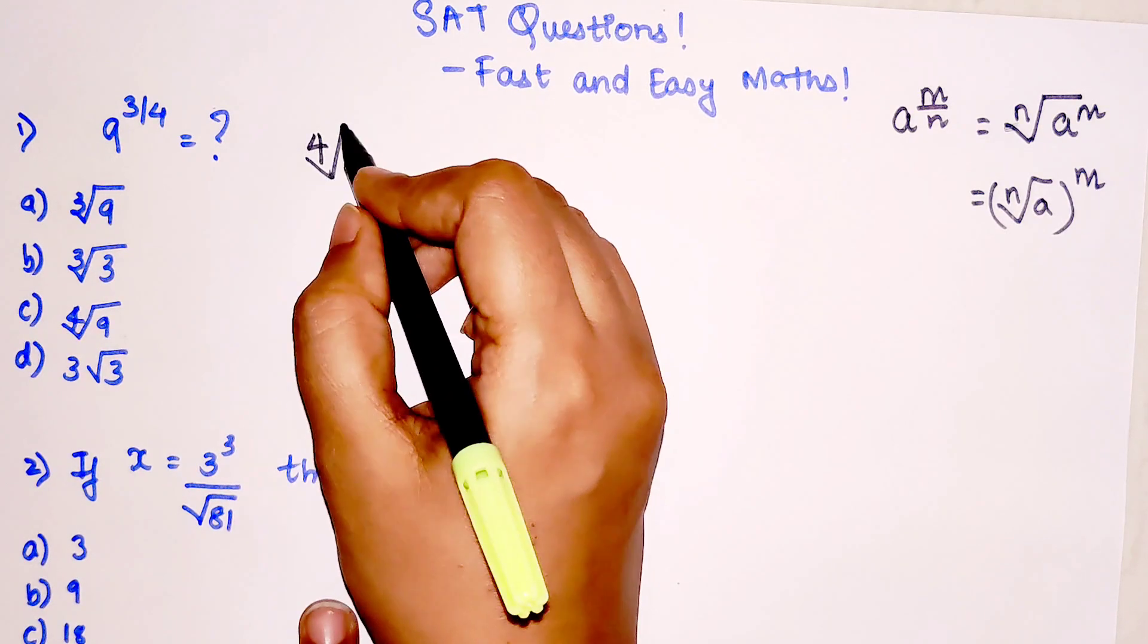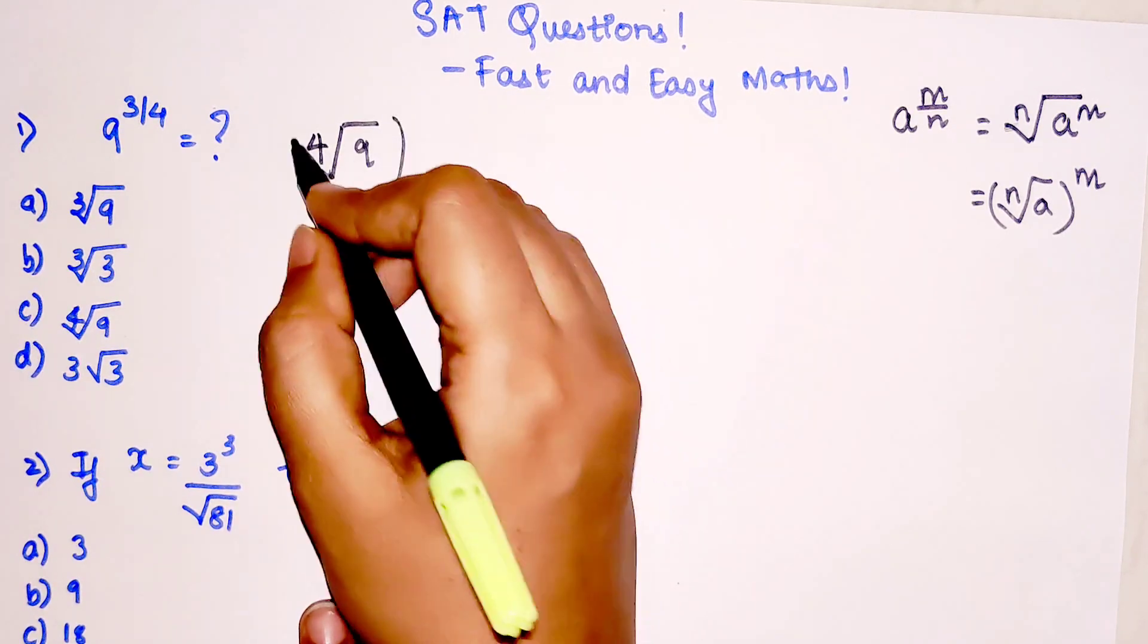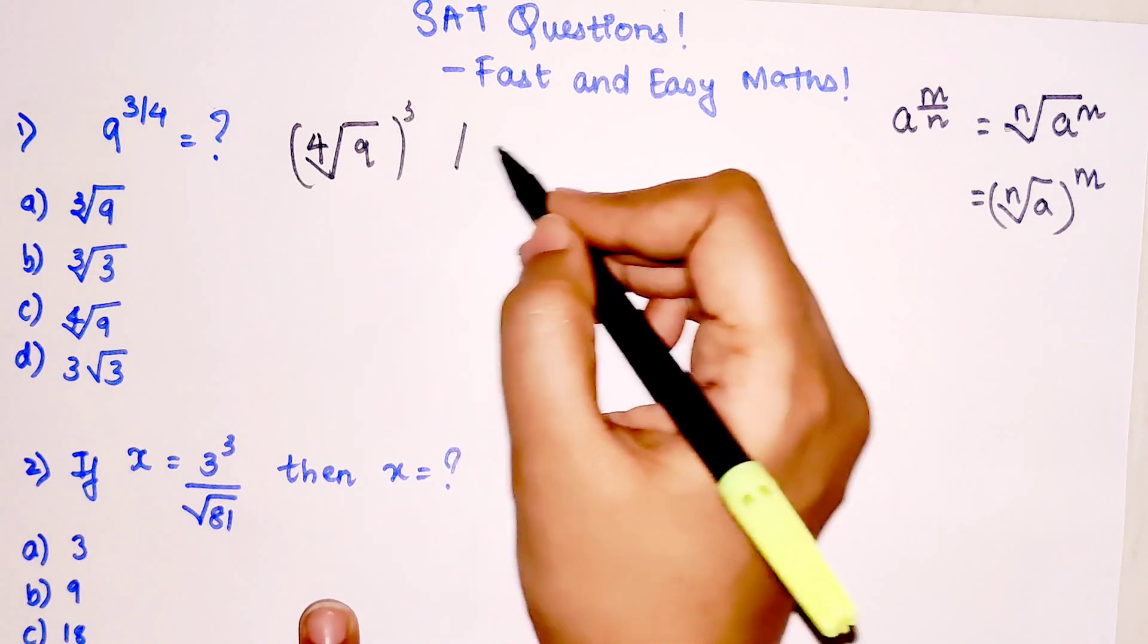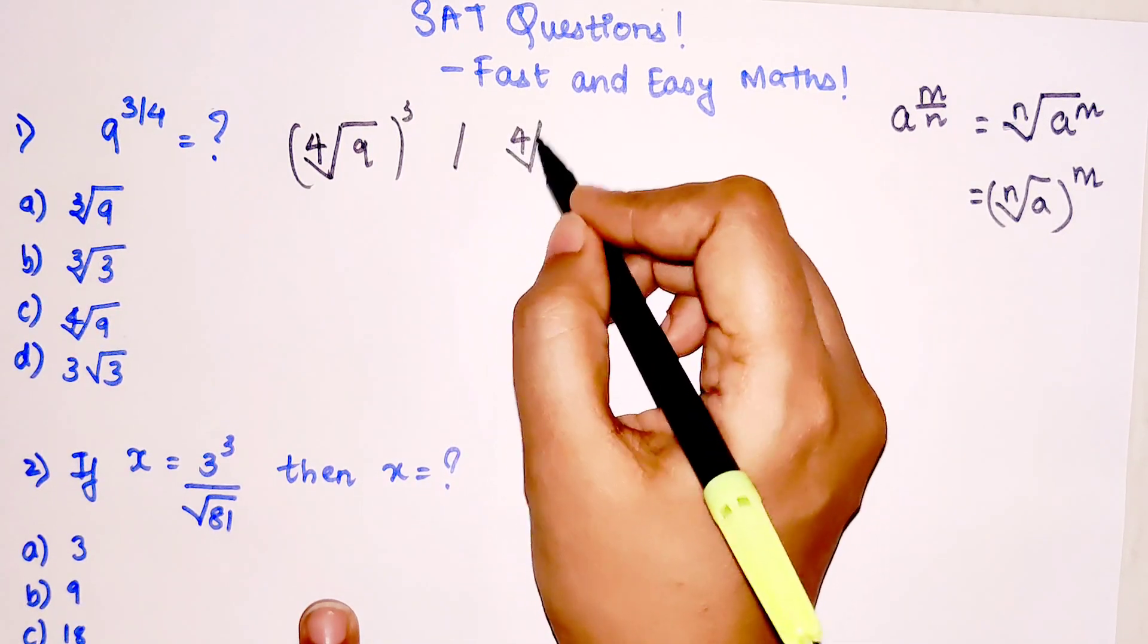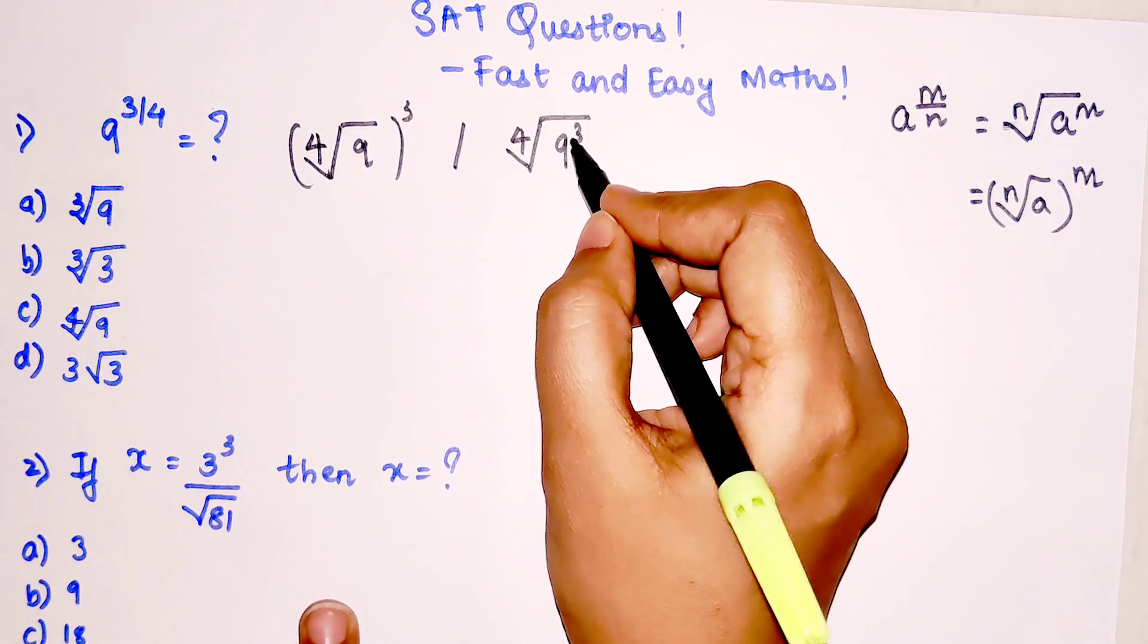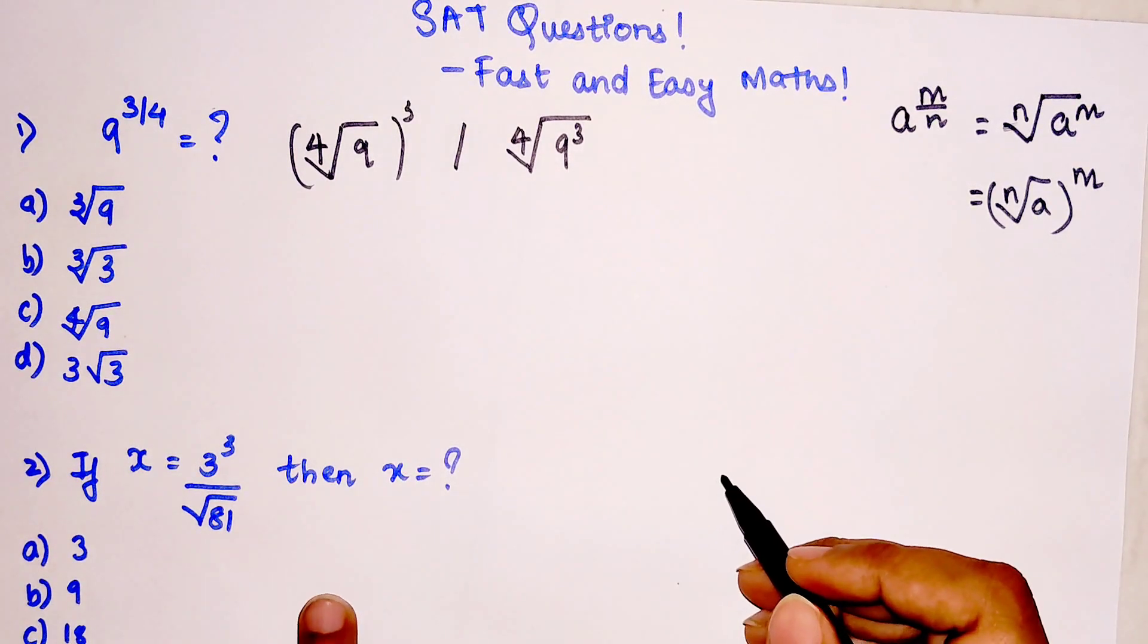Now let's write this over here. So basically this is now reading as fourth root of 9, the whole raised to 3, or we can read it as fourth root of 9 raised to 3.